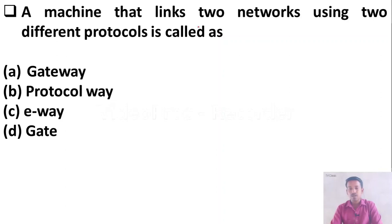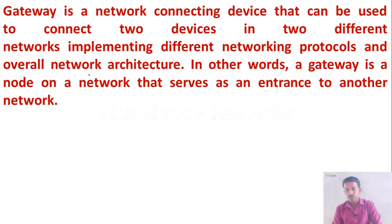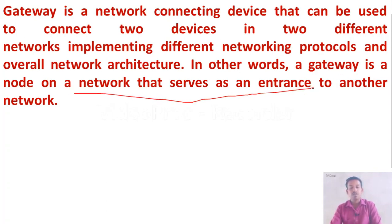A machine that links two networks using two different protocols is called a gateway. A gateway is a node on a network that can be used to connect two devices in two different networks, and also serves as an entrance to another network.